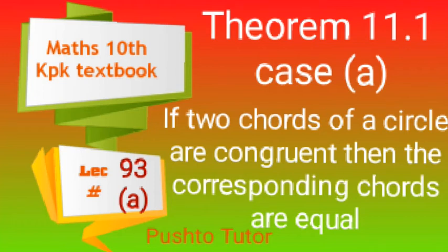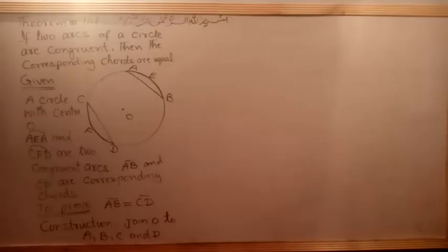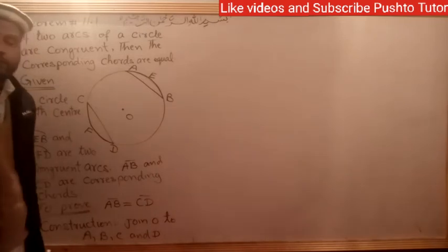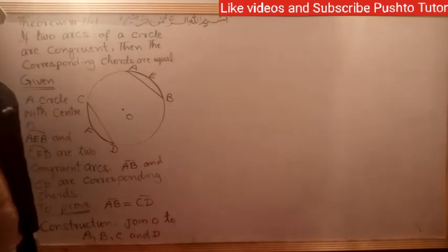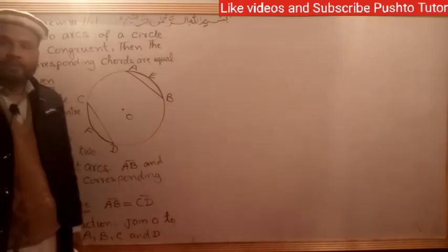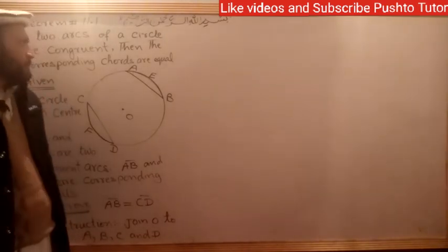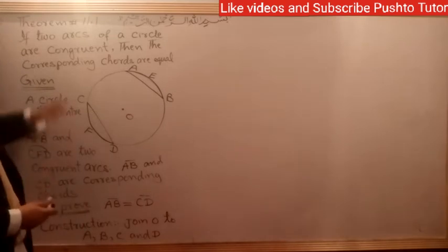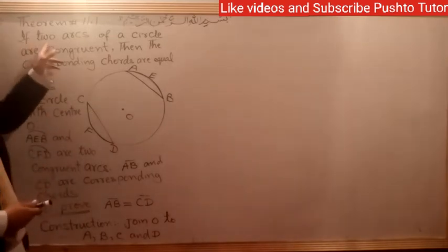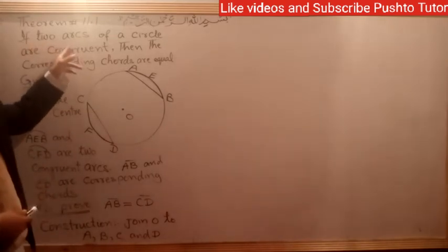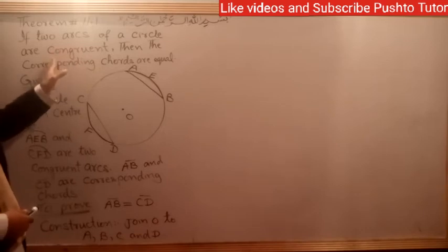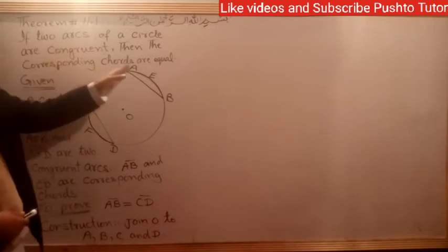Bismillahirrahmanirrahim. I am going to lecture the 10th class maths, theorem number 11.1. The theorem 11.1 statement: if two arcs of a circle are congruent, then the corresponding chords are equal.